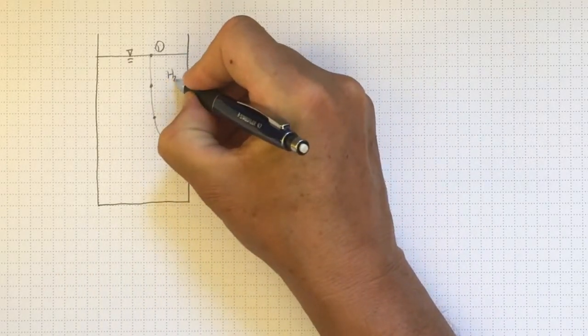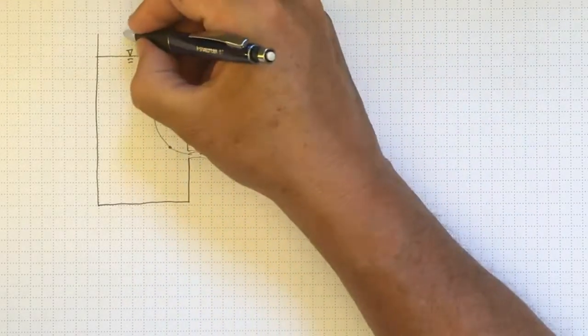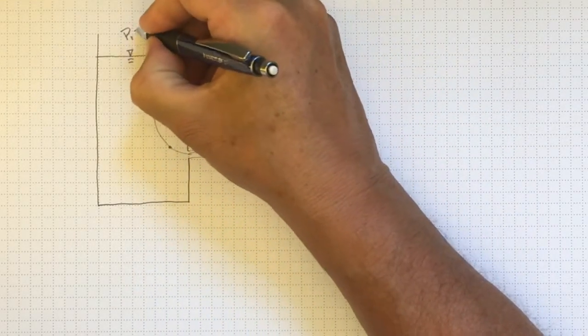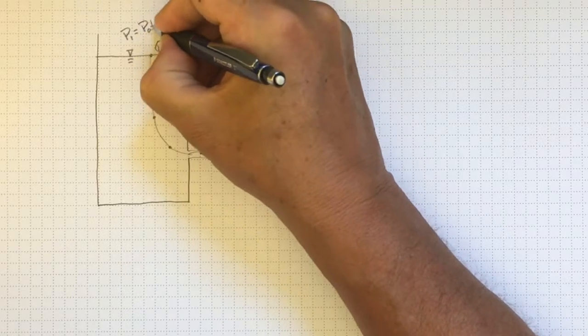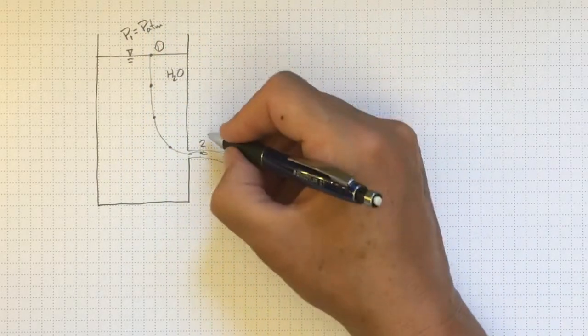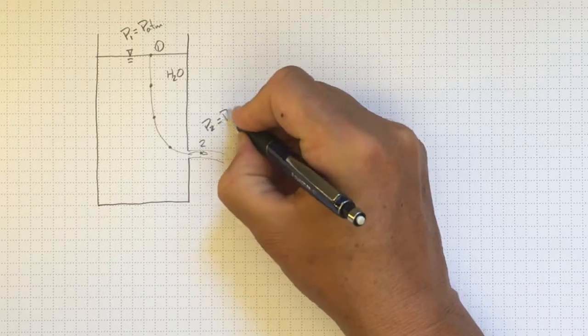This is water, our usual fluid. The air pressure up here, P1, is at atmospheric pressure. And down here at P2, we're also open to the atmosphere.